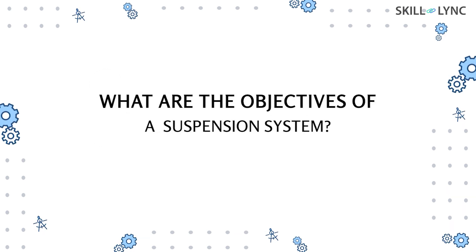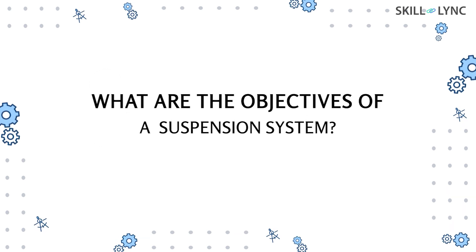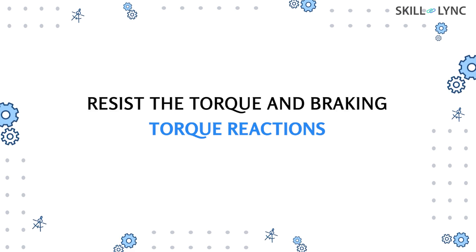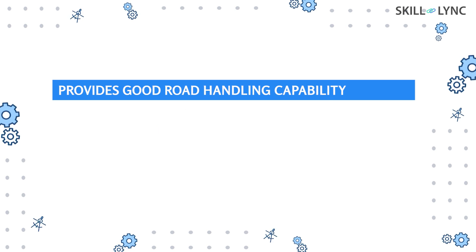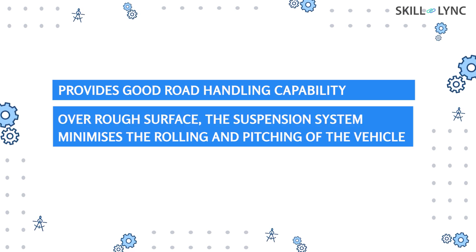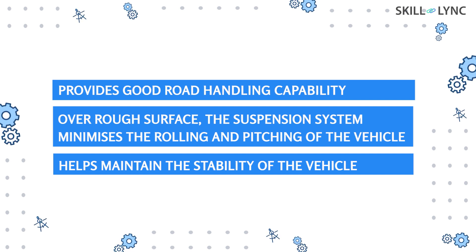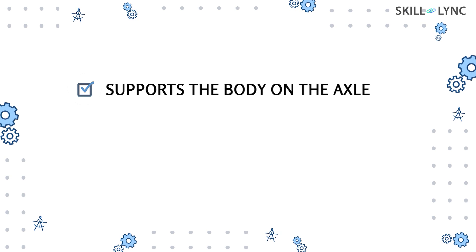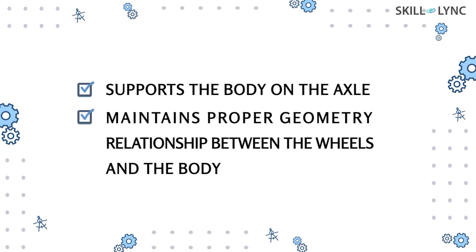So what are the common objectives while designing a suspension system? The suspension system helps in eliminating road shocks from getting to the transmission and other vehicle components, and also resists torque and braking torque reactions. It provides good road handling by minimizing the rolling and pitching of the vehicle while traveling over rough surfaces or during cornering and braking. It also helps maintain stability and supports the body on the axle, maintaining a proper geometrical relationship between the wheels and the body.